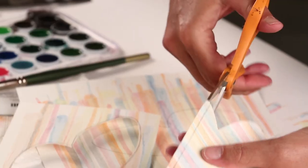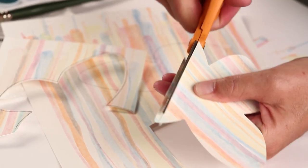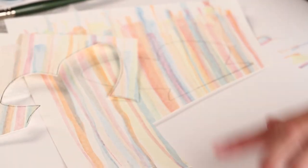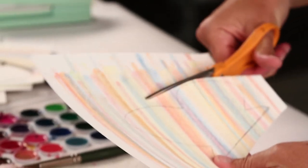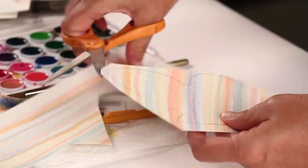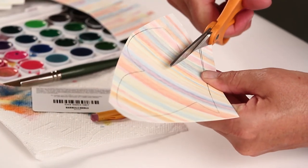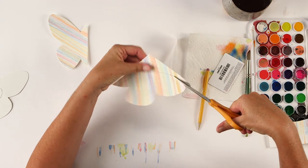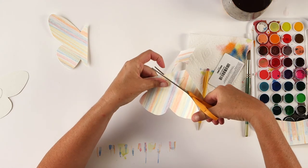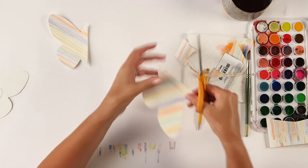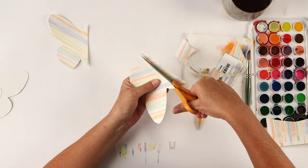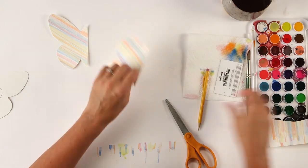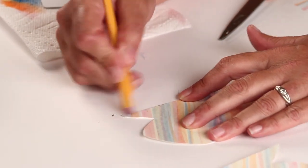Okay. And now this one I want to keep as straight as I can. So I try to do it if I can in one cut. So I've got my second butterfly wing. Okay. I got a little pencil on there. So I'm just going to erase that.